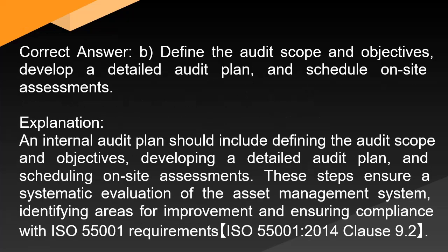Correct answer: B. Define the audit scope and objectives, develop a detailed audit plan, and schedule on-site assessments. Explanation: An internal audit plan should include defining the audit scope and objectives, developing a detailed audit plan, and scheduling on-site assessments. These steps ensure a systematic evaluation of the asset management system, identifying areas for improvement and ensuring compliance with ISO 55001 requirements. ISO 55001:2014 Clause 9.2.